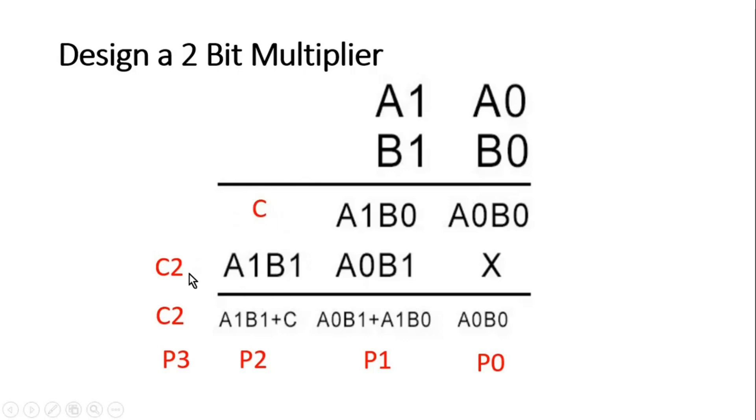That will form my third term, and whatever carry will be generated from these two numbers will be forwarded at the next position. Let us name it as C2, so this is C2. So C2 will come as it is. The final product, let us name it as P as discussed earlier also. So this will be my P0 term, this will be my P1 term, this will be my P2 term, this will be my P3.